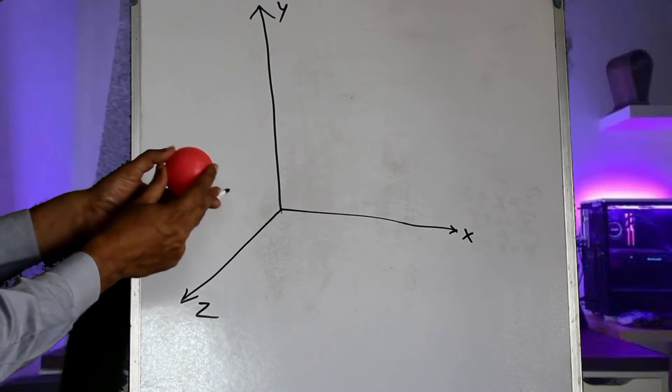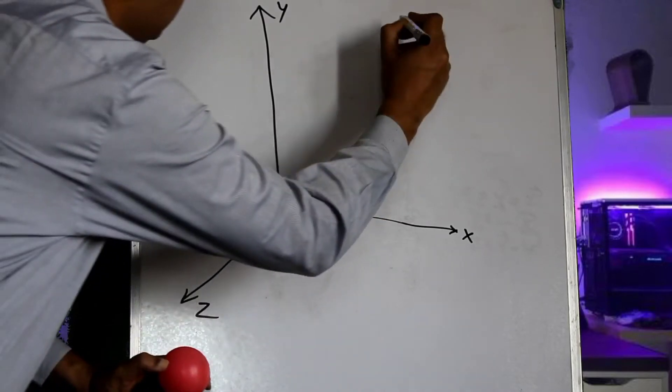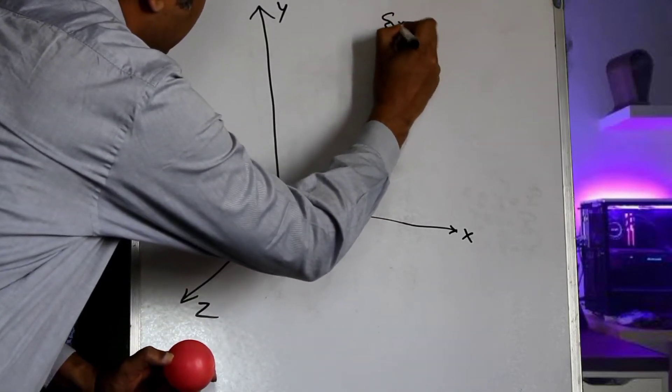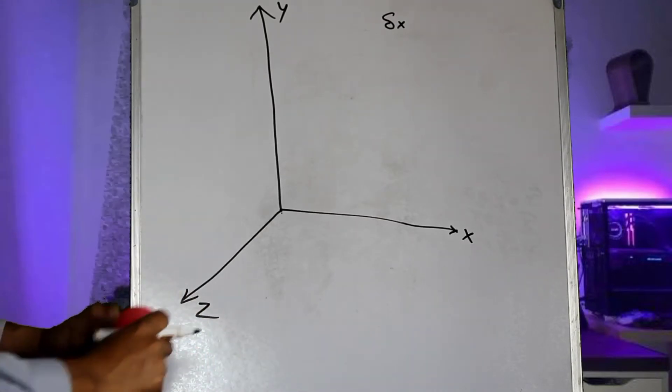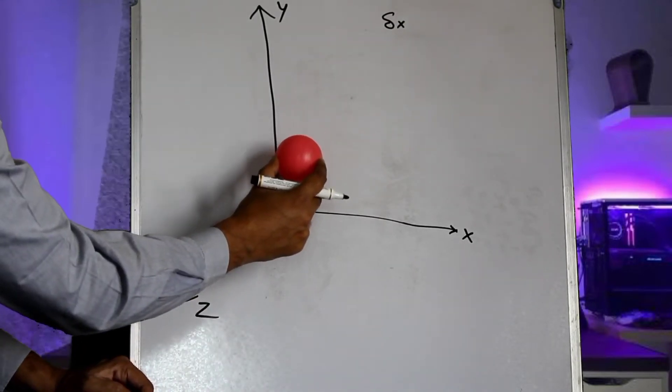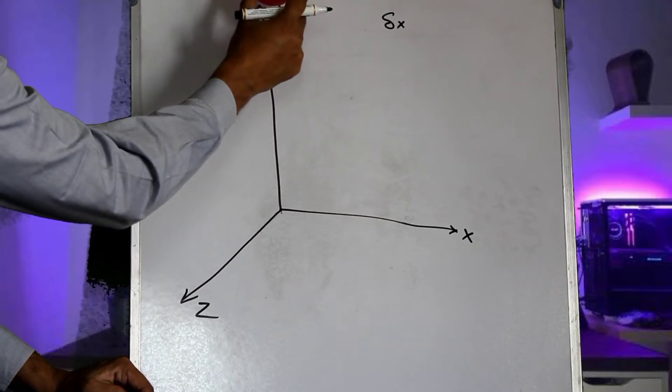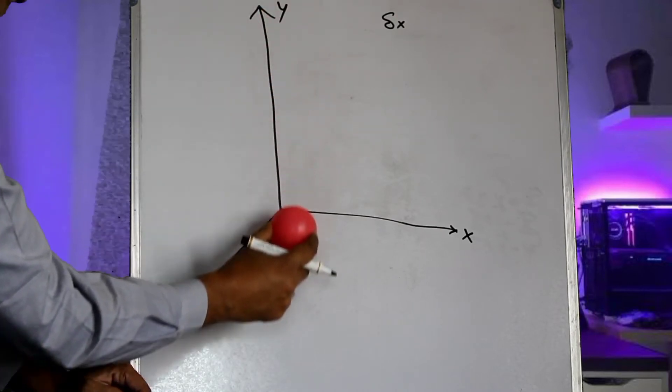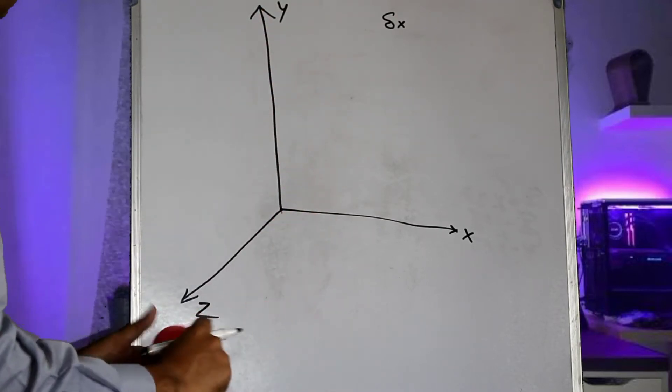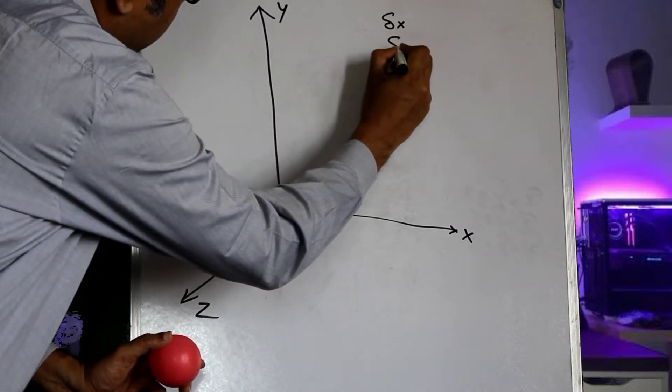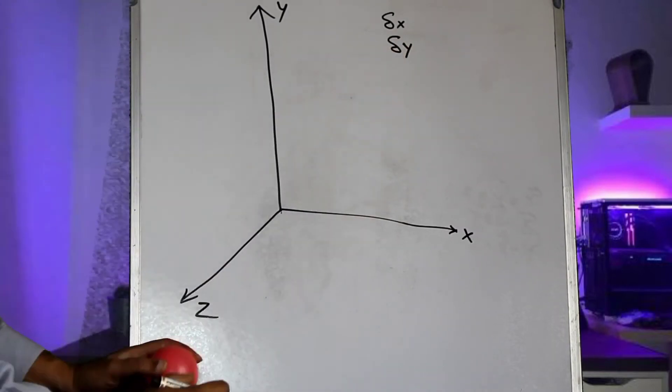Now this is called the translational motion of x represented by delta x. This ball can also move along the positive direction of the y axis or the negative direction of the y axis. This would be called the translational y represented by delta y.